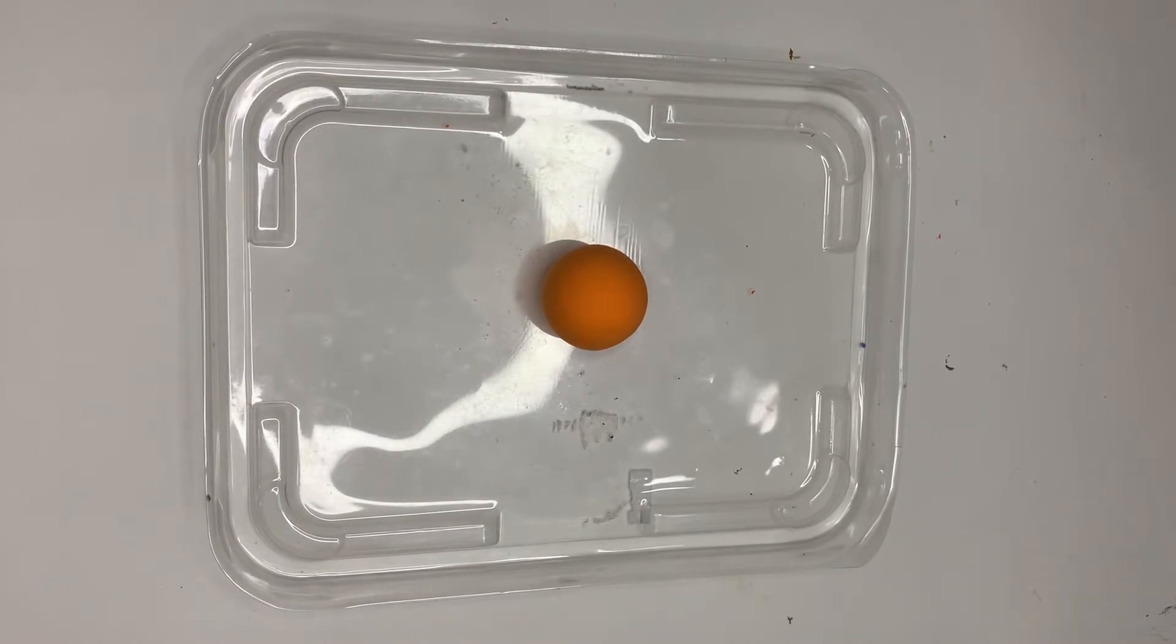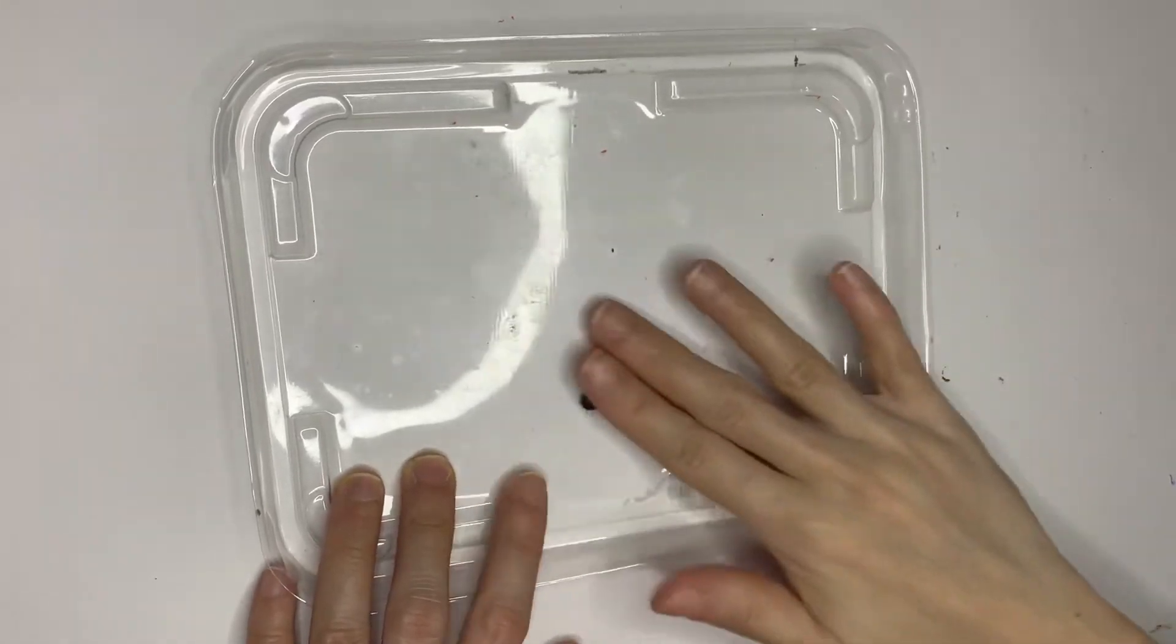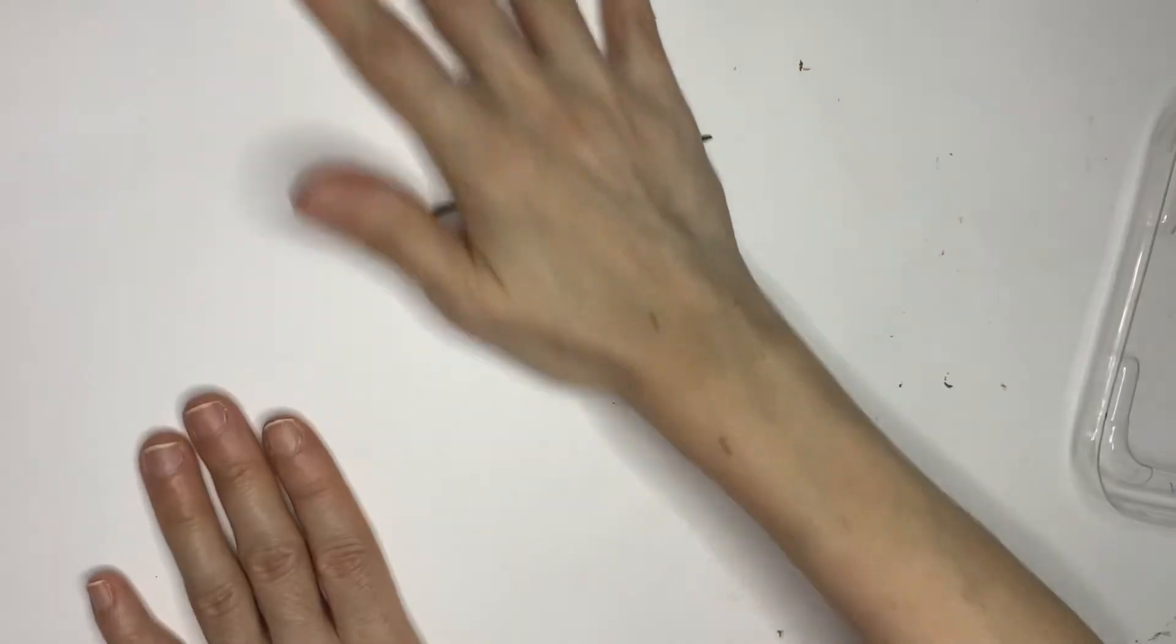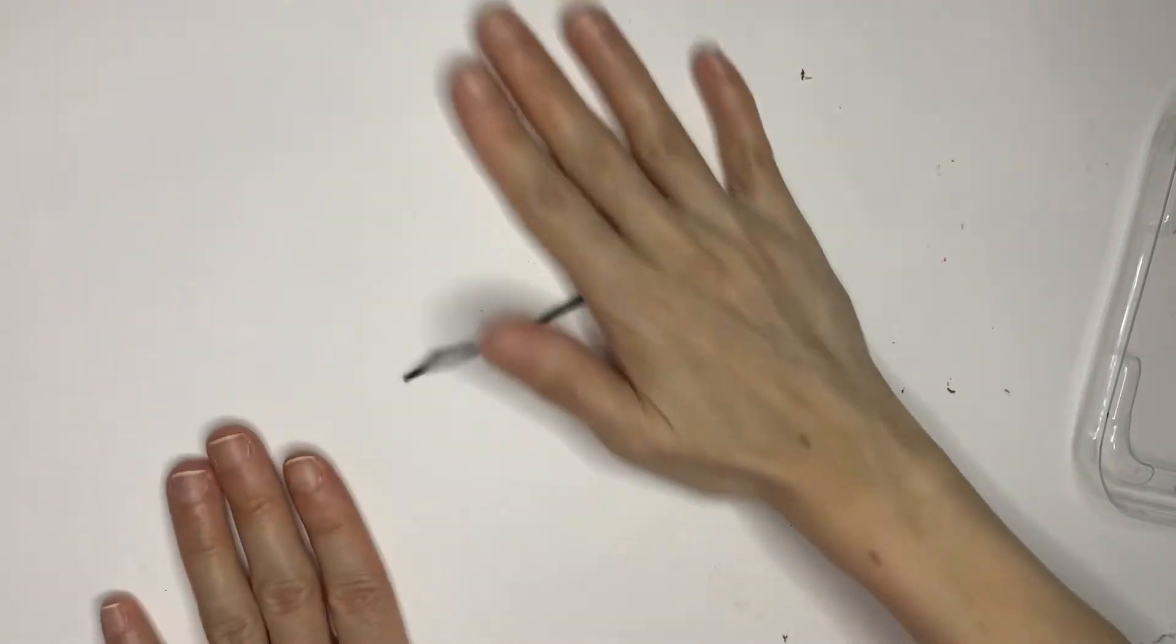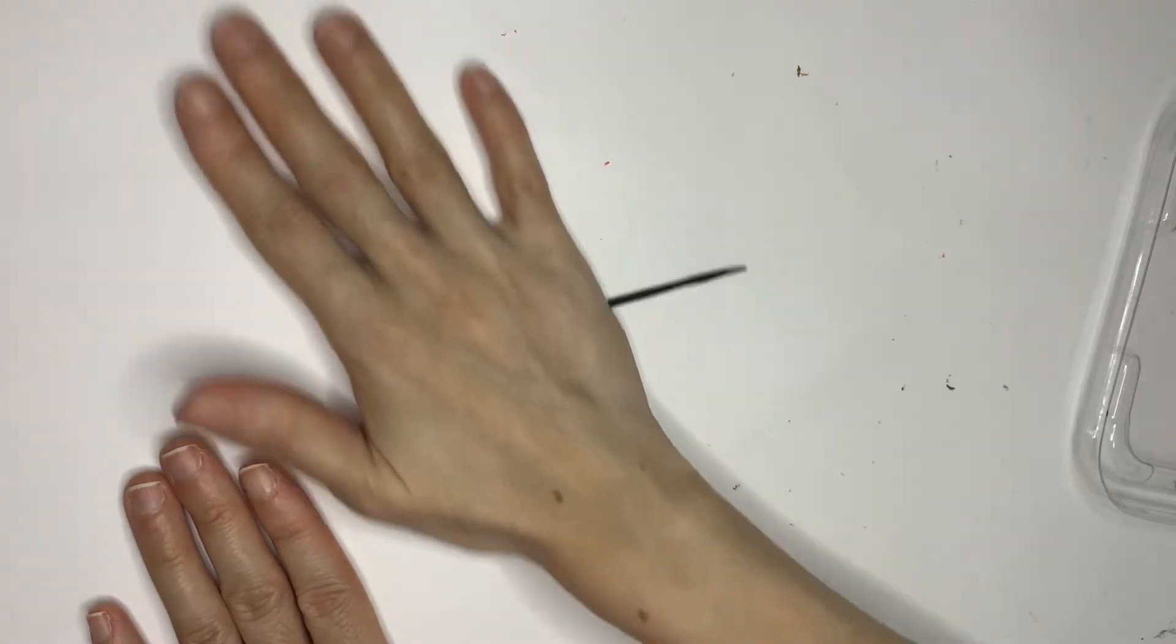We are going to use black air clay, slowly rub like this until it becomes a long thin stripe. Try to use the force from your palm instead of the fingers so that it can be more even.